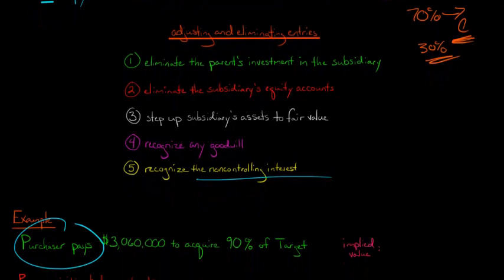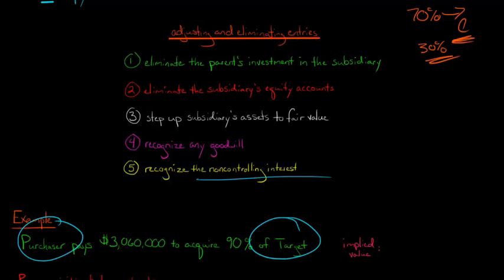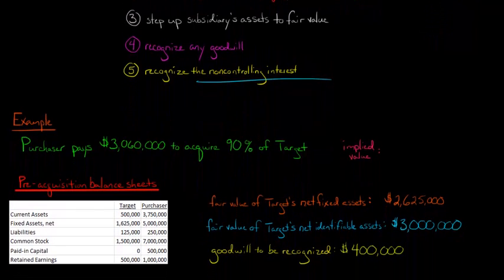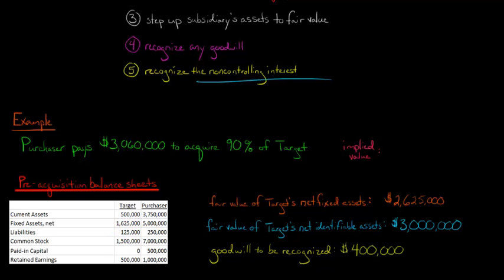Let's say the purchasing corporation pays $3,060,000 to acquire 90% of another corporation, which we'll call Target. Because you're buying more than 50% of Target, you're going to be required to consolidate Target — meaning all of Target's assets and liabilities are going to become your assets and liabilities. We've got two pre-acquisition balance sheets here for the purchaser and the Target. Target has $125,000 of liabilities. We're not just going to add all the accounts — we've only acquired 90% of the Target.